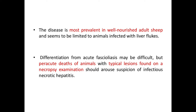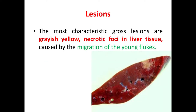Now let's see the lesions. The most characteristic gross lesions are, as shown in this picture, greyish-yellow necrotic foci in the liver tissue caused by migration of young flukes.